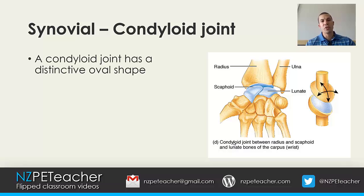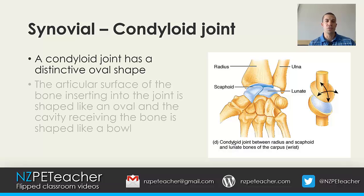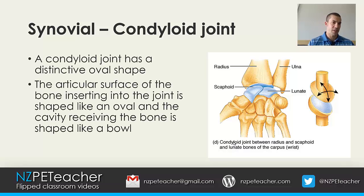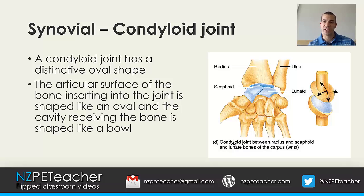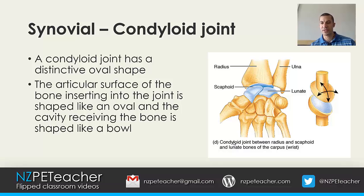A condyloid joint has a distinctive oval shape. The articular surface of the bone inserting into the joint is shaped like an oval, and the cavity which receives the bone is shaped like a bowl. The example shown is a condyloid joint occurring in the carpal bones, so your wrist.